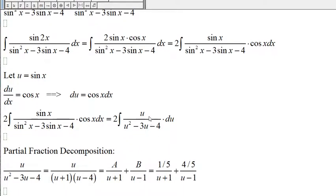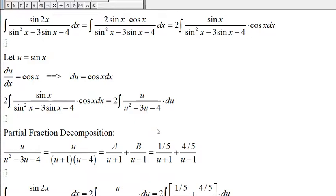Here we have u over u squared minus 3u minus 4. The factors for u squared minus 3u minus 4 are u plus 1, u minus 4.